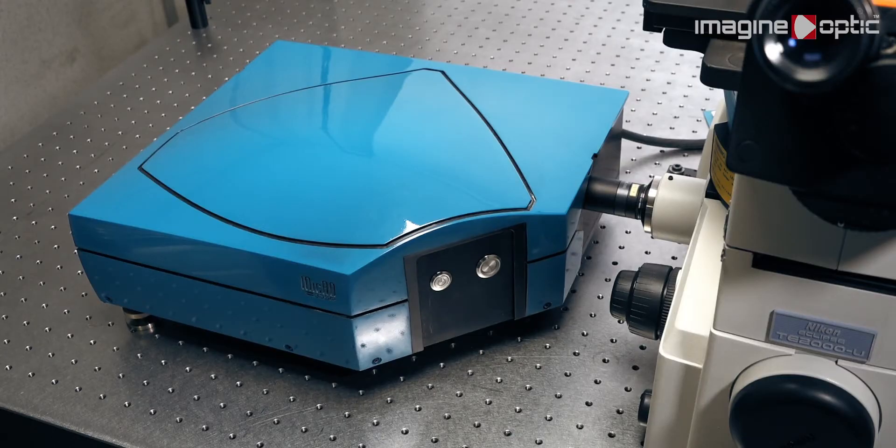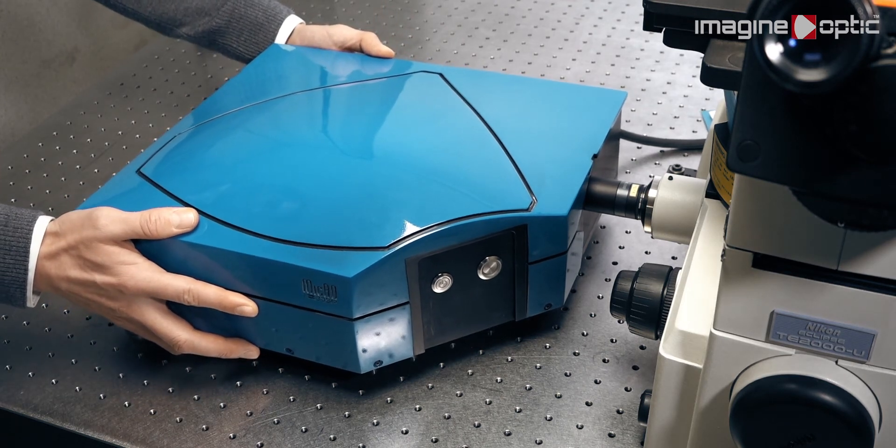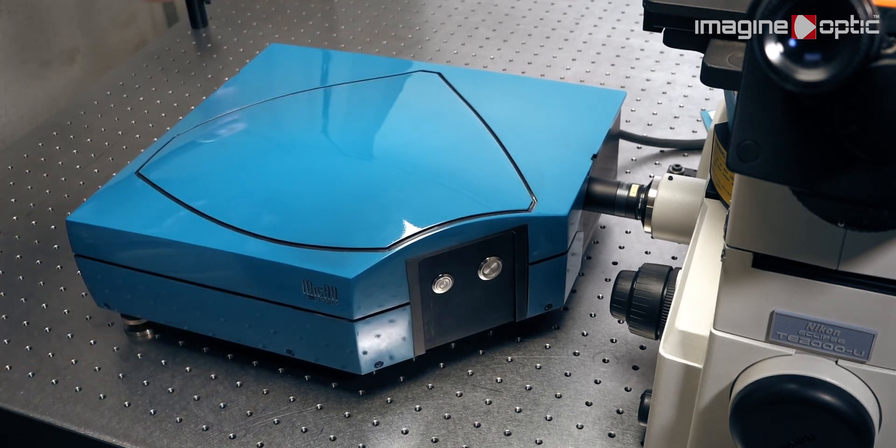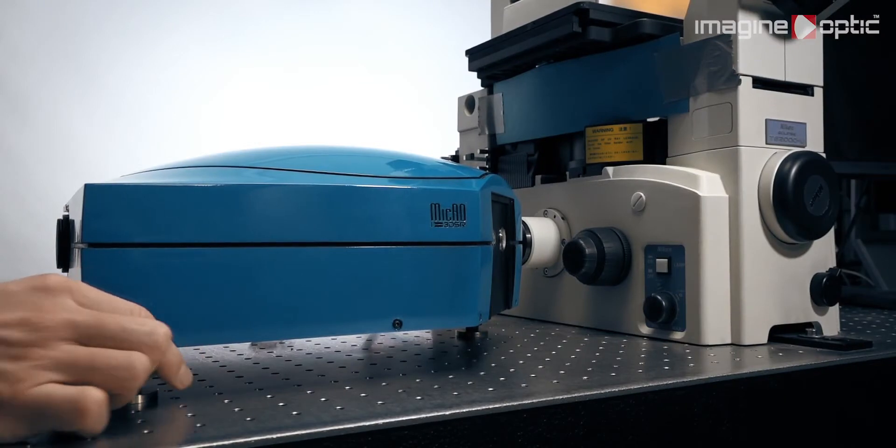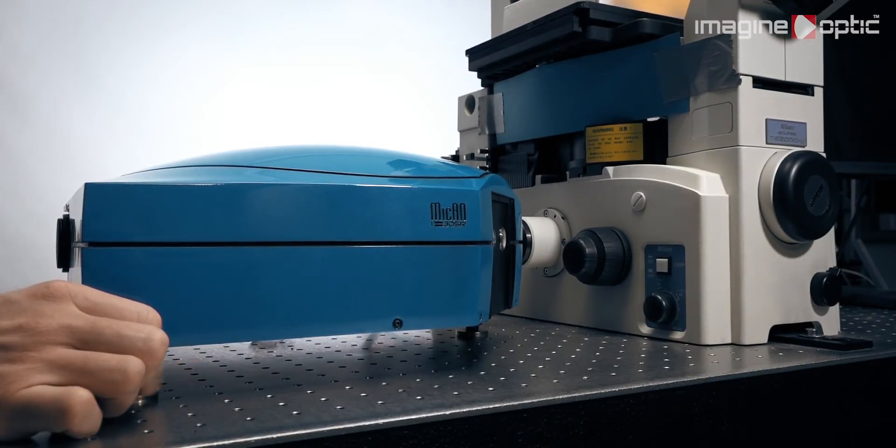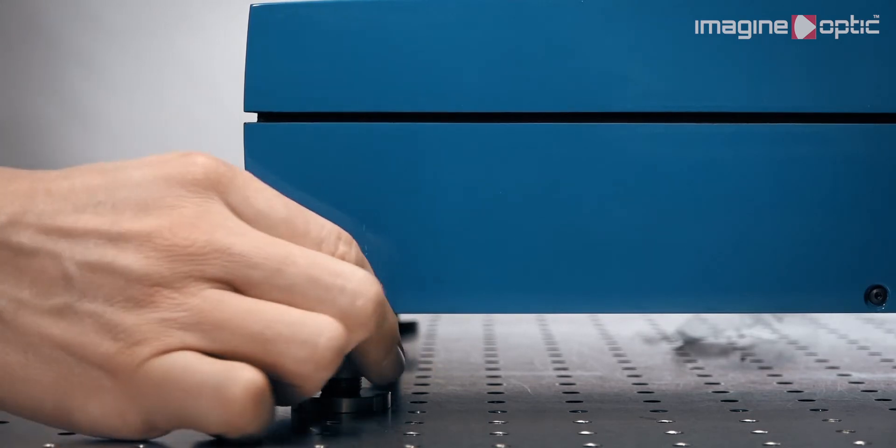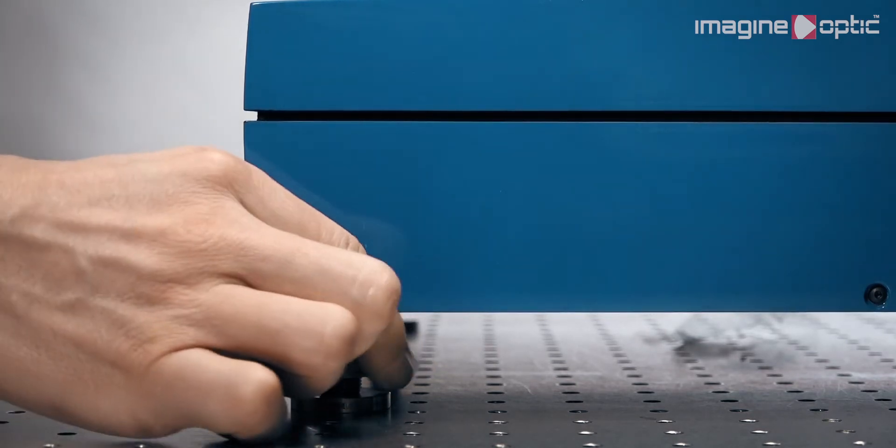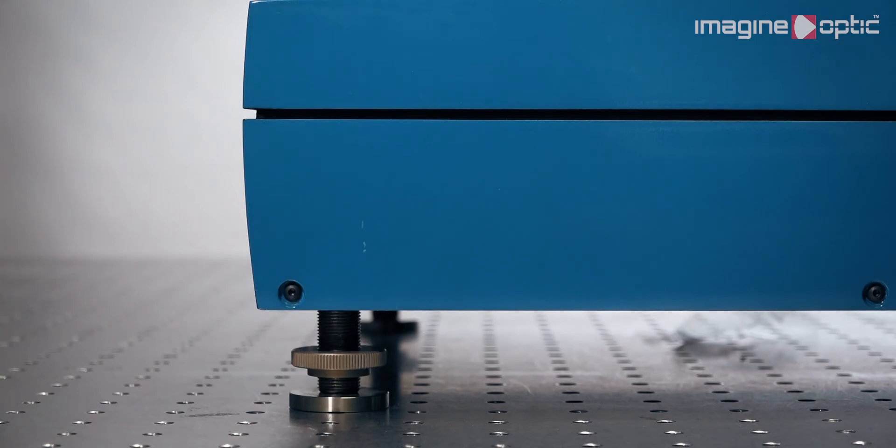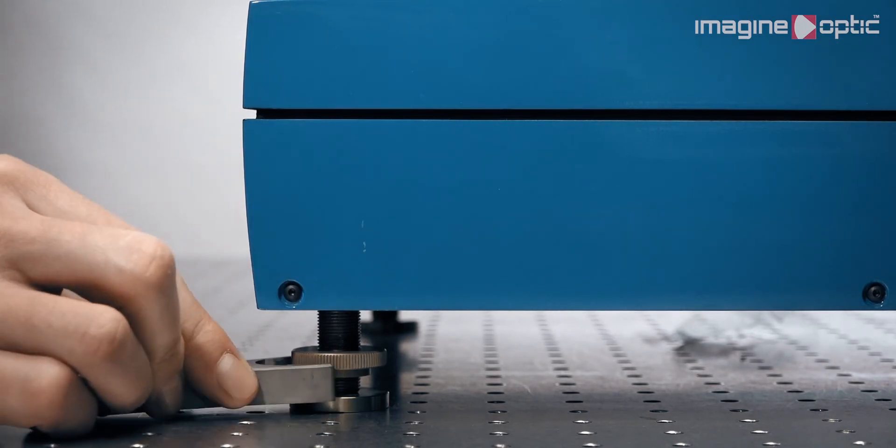The installation of Mikao unit is straightforward. The first step is to align it with the microscope. It is possible to adjust the height using the feet of the Mikao unit and adjust the horizontal tilt by playing with the lateral position of Mikao. Once the optimal position is found, Mikao's device is firmly fixed to the optical bench using clamps.